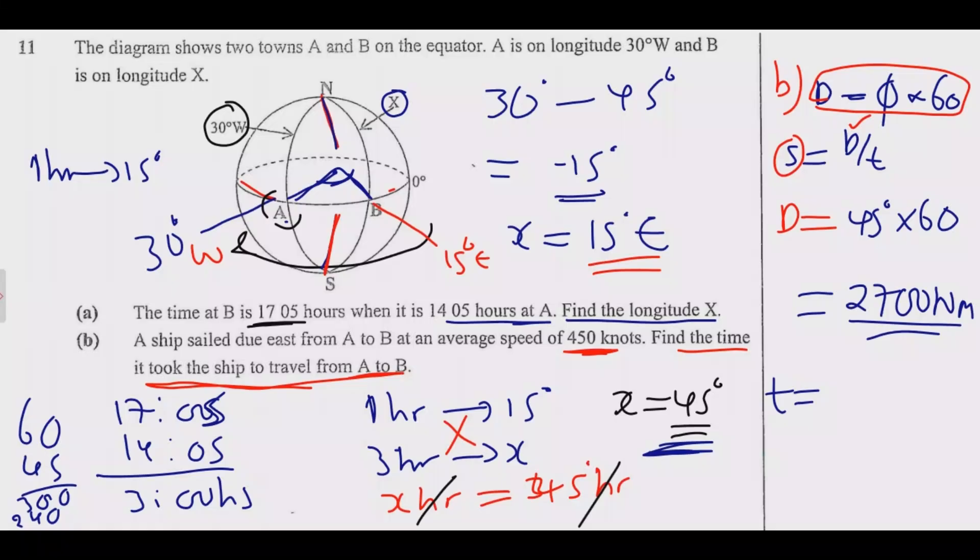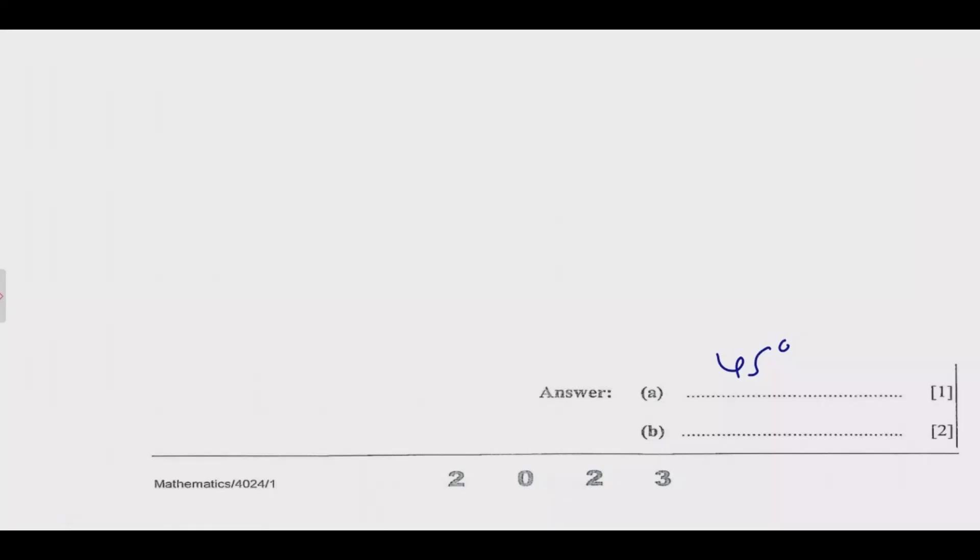Then you can use this to find the time. Just make T the subject of the formula, so T equals distance over speed. We have 2,700 nautical miles divided by the speed which is 450. So it will be 3 into 45 is 15, 3 into 27 is 9, so this becomes 19, 15 into 96, so we have 6 hours. The answer is 6 hours. So we have 45 degrees and 6 hours. This is how you answer this question to get these three marks.